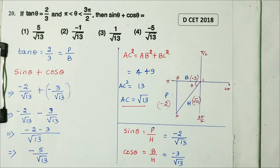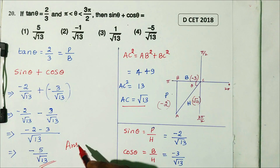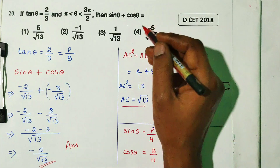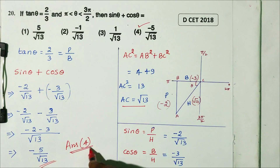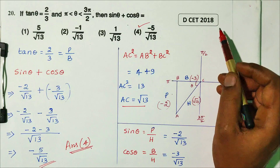So the answer is −5/√13. Option D is the right answer. This is the solution to equation DCT 2018.